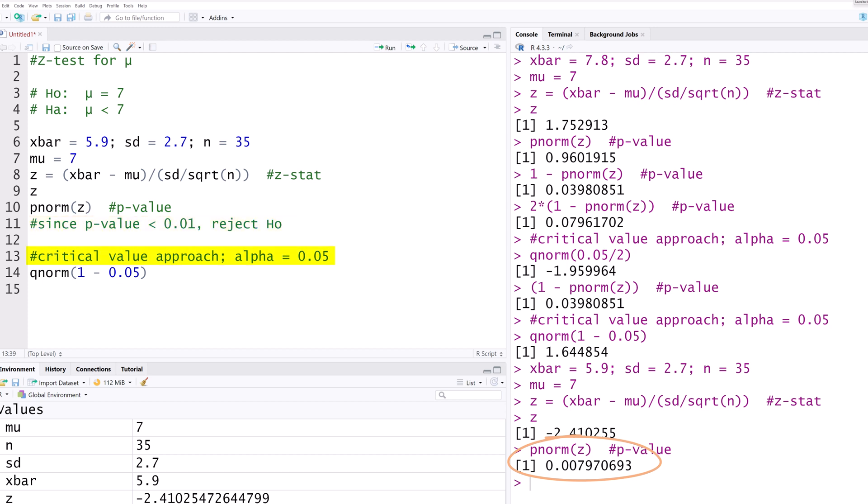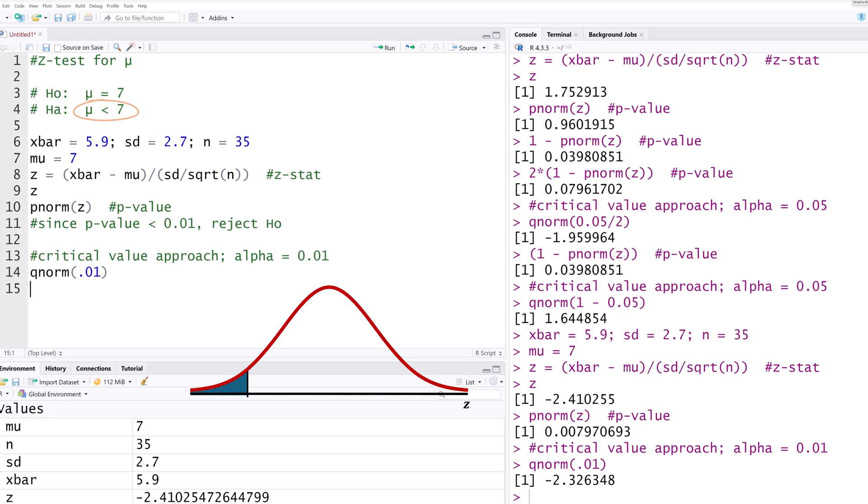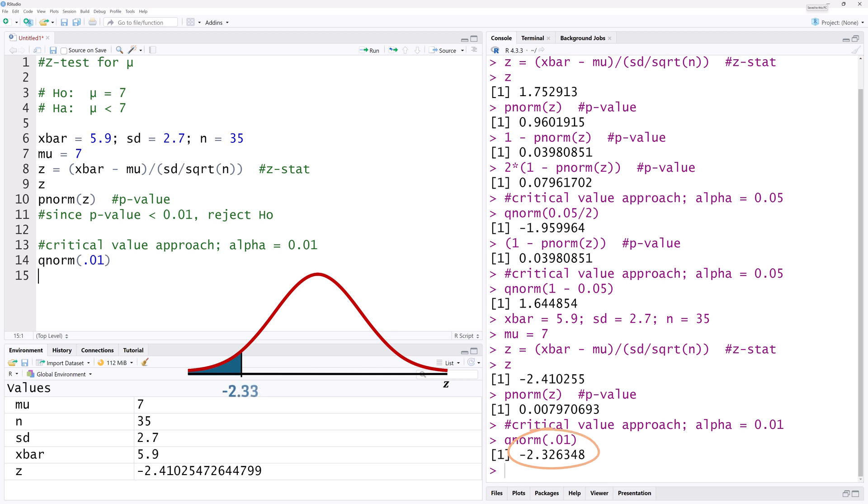For the critical region approach, suppose alpha equals 0.01. We will simply use QNORM 0.01, since this is a lower tailed test. Running that gives a Z critical value of negative 2.33.